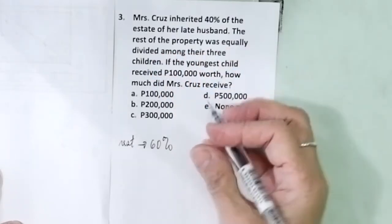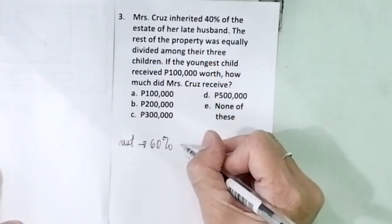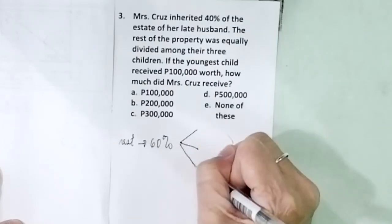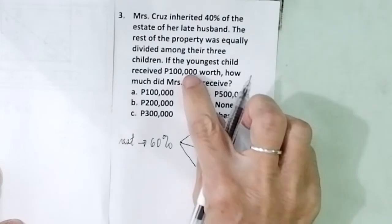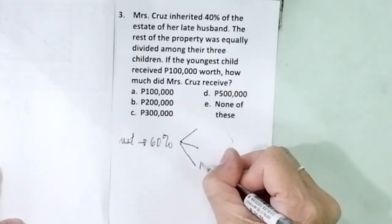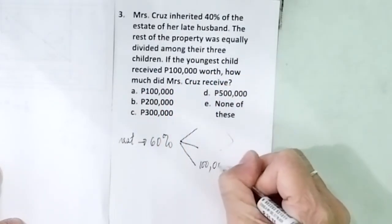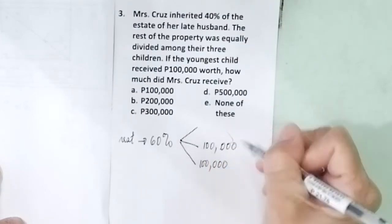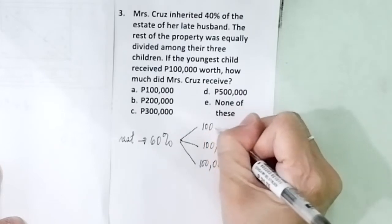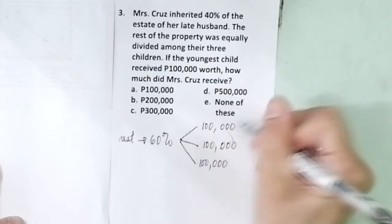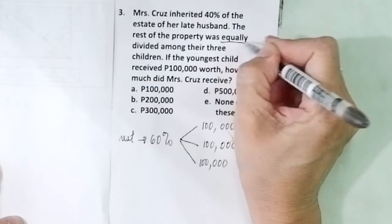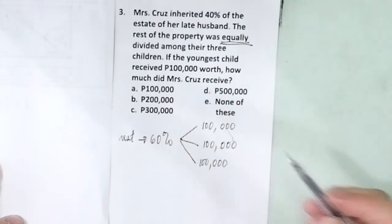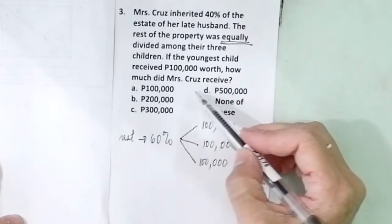The rest of the property was equally divided among their three children. You have child 1, child 2, child 3. The youngest child received 100,000. So if the youngest child here received 100,000, the second child also received 100,000. How did I know that? Equally. Equally divided. So it's 100,000 each.